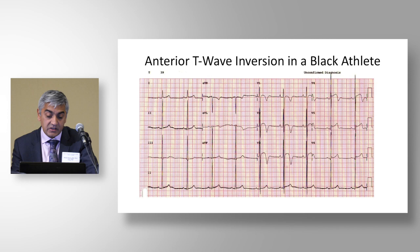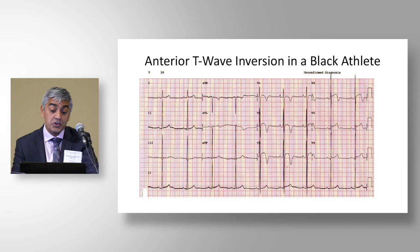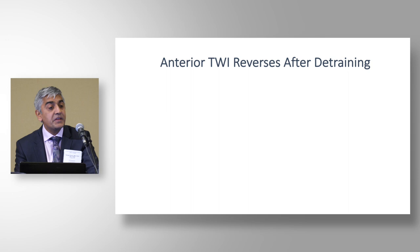This is a normal ECG in a black individual: T-wave inversion confined from V1 to V4, J-point elevation, convex ST segments, and deep asymmetric T-wave inversion. You see various patterns — J-point elevation and convex ST segments across multiple leads, all normal variants in a black individual — though you could be forgiven for diagnosing acute MI, Brugada syndrome, or arrhythmogenic right ventricular cardiomyopathy.